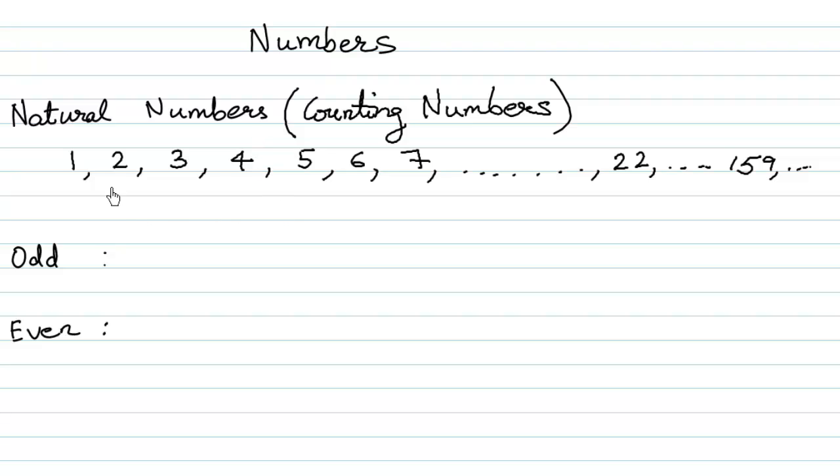Now, natural numbers are classified as odd numbers and even numbers. All the numbers that come in the table of 2, for instance 2 ones are 2, 2 twos are 4, 2 threes are 6, 2 fours are 8, 2 fives are 10...